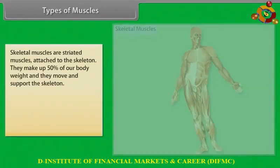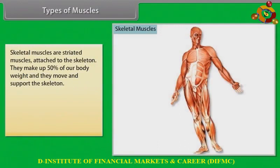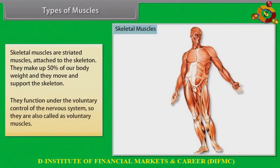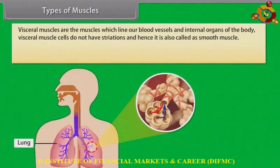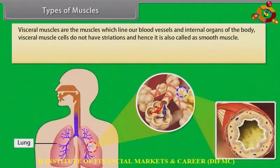Types of muscles. Skeletal muscles are striated muscles attached to the skeleton. They make up 50% of our body weight and they move and support the skeleton. They function under the voluntary control of the nervous system, so they are also called voluntary muscles.